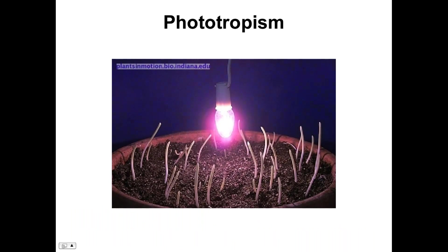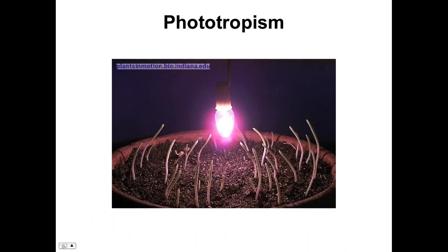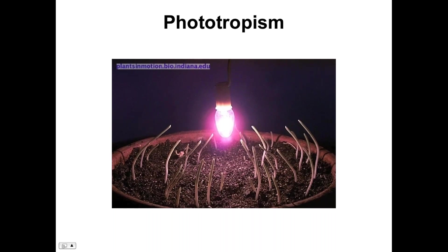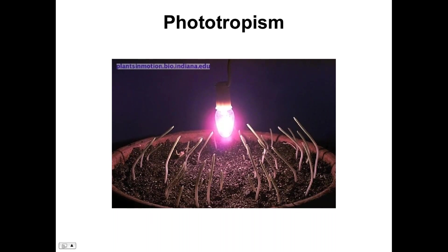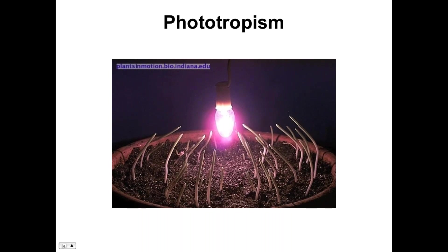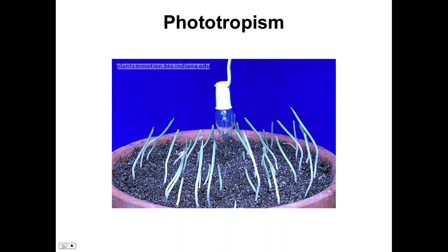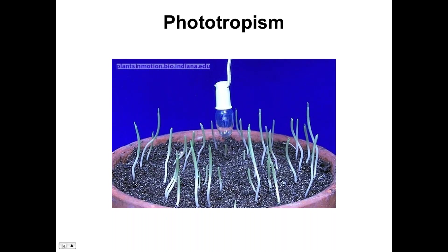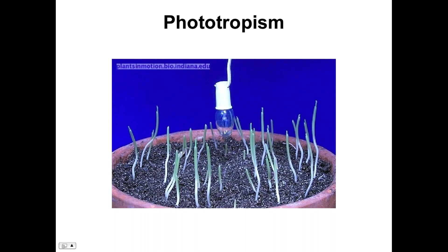Here are maize seedlings newly germinated with a light bulb in the middle — all of them are bending towards the light. When the light goes off, they stop their phototropic behavior and start growing back upward, because there are two competing forces: phototropism towards the light and gravitropism to grow upwards. When the side light was on and overhead lights were off, phototropic drive dominated. Once that was removed, gravitropic growth took over.